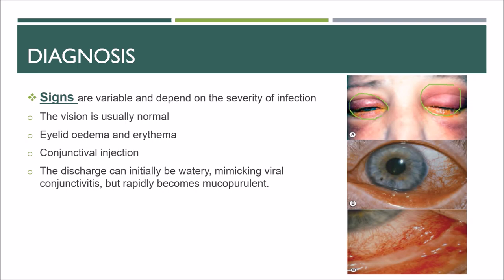Conjunctival injection is marked in bacterial conjunctivitis and is away from the limbus, compared to ciliary injection which surrounds the limbus. The discharge can initially be watery, mimicking viral conjunctivitis, but rapidly becomes mucopurulent, as seen in the figure — this is mucopurulent discharge in the inferior fornix.